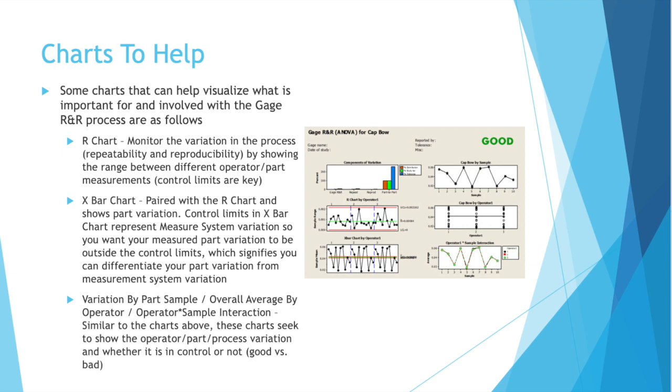You have the x bar chart, which is paired with the R chart and shows part variation. Control limits in x bar chart represent the measurement system variation, so you actually want your measured part variation to be outside the control limits, which signifies you can differentiate your part variation from measurement system variation. Think about it this way. If your measurement system variation was very wide and your part variation was within that, you wouldn't know if that was actually the part variation causing different measurements or your measurement system being so out of control.